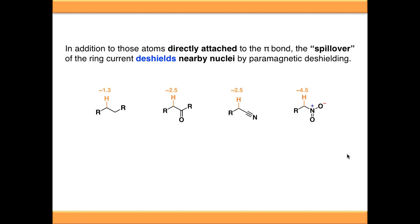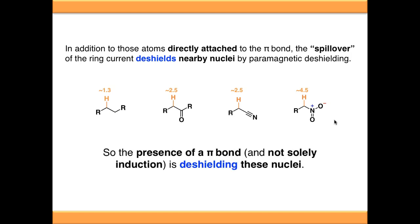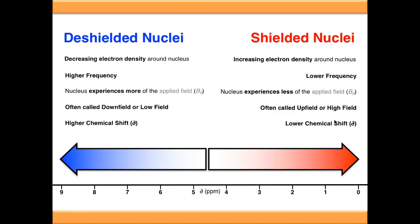In addition to atoms directly attached, you can think of it as a spillover effect. A standard alkyl proton environment at about 1.3 PPM gets a spillover of the magnetic anisotropy from a neighbouring carbonyl, which effectively deshields that proton. This explains why the differences in PPM for systems with pi bonds are much higher than those based purely on induction, like the alkyl fluorides seen before. To summarise: deshielded nuclei have lower electron density, resonate at higher frequency, and appear downfield at higher chemical shift. Shielded nuclei have increased electron density and all of the opposite traits.